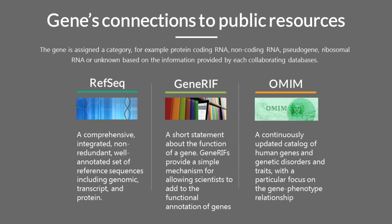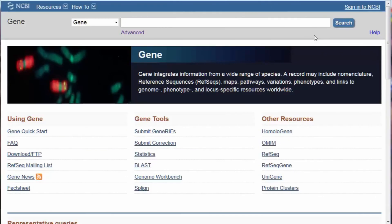The Online Mendelian Inheritance in Man, or OMIM, is a continuously updated catalog of human genes and genetic disorders and traits, with a particular focus on the gene-phenotype relationship. The NCBI Gene Database is an important resource because it collects together in one place information on each gene and provides links to other NCBI and related databases.